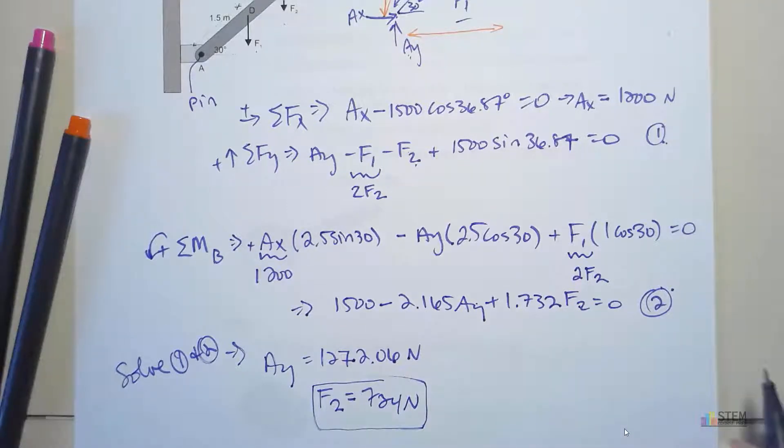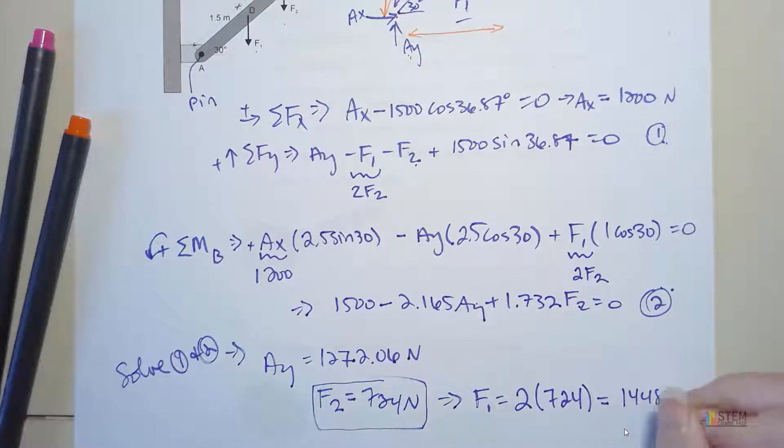That was one of the things we wanted. Once we know F2, we can get F1. F1 is twice the value of F2, so that gives us 1448 newtons for F1.